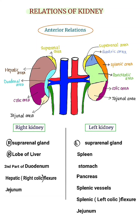Anterior relations, right kidney: right suprarenal gland, right lobe of liver, second part of duodenum, hepatic or right colic flexure, jejunum.